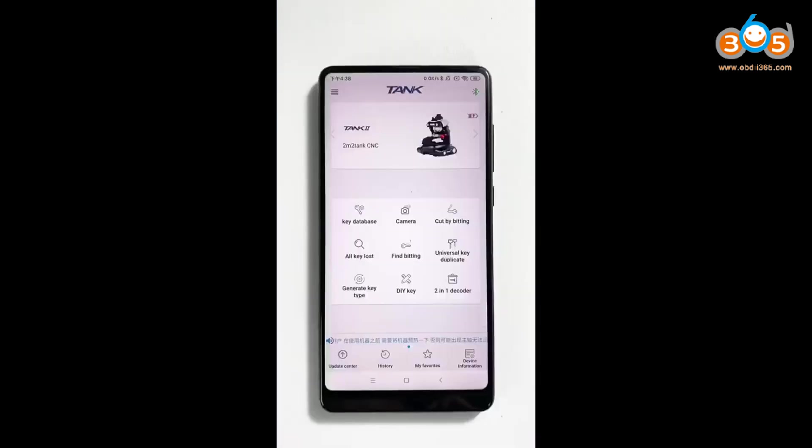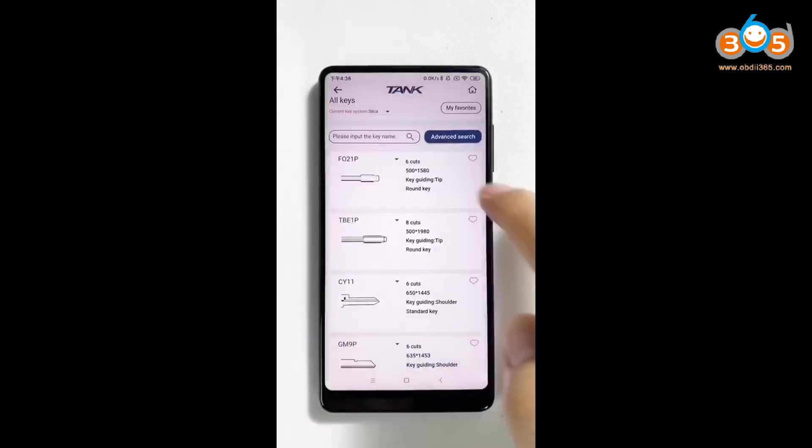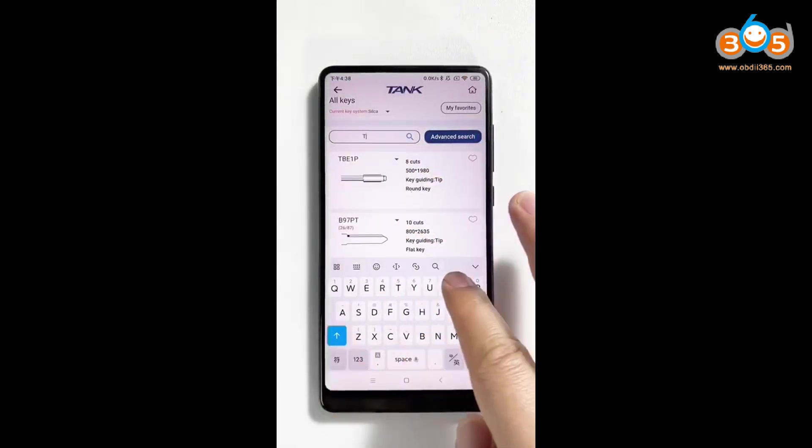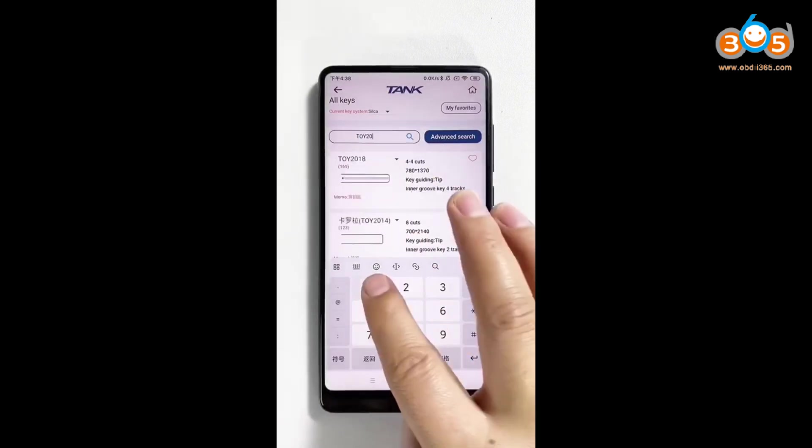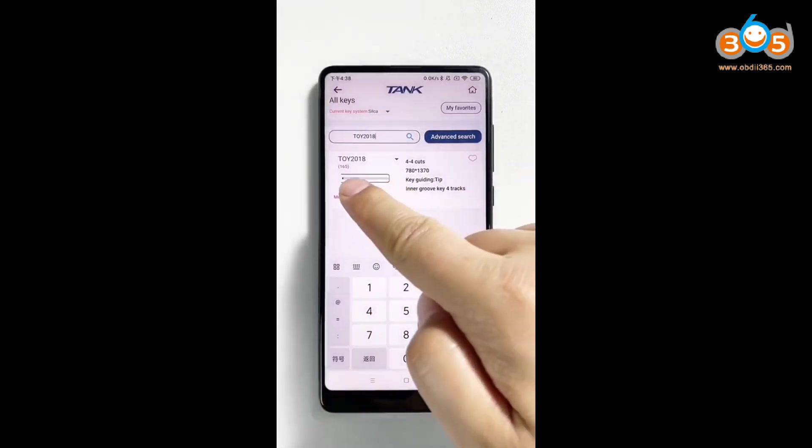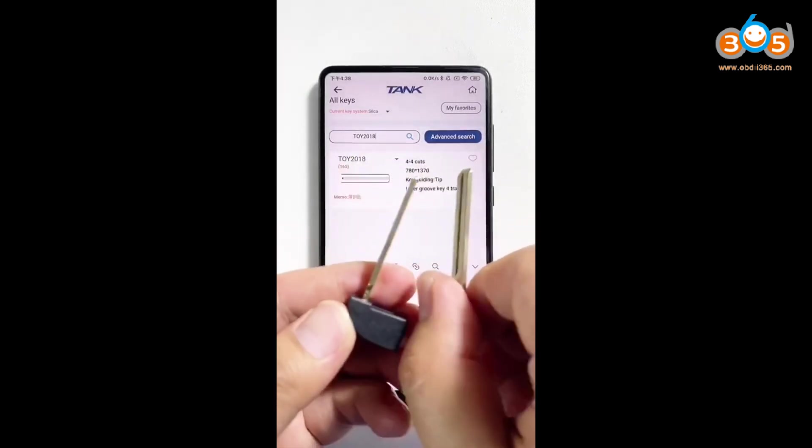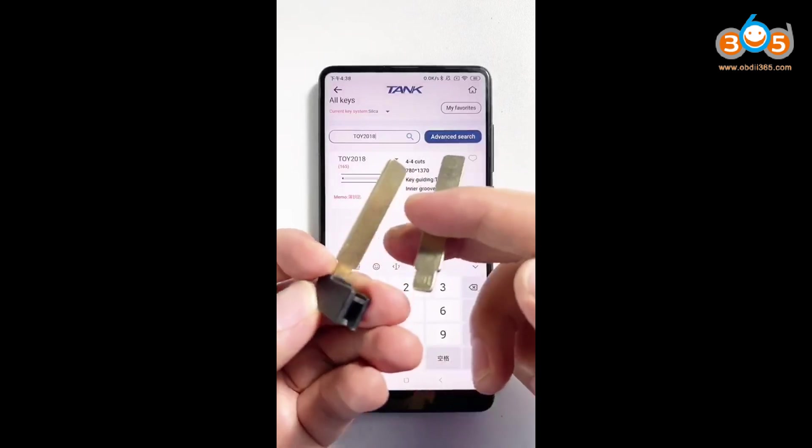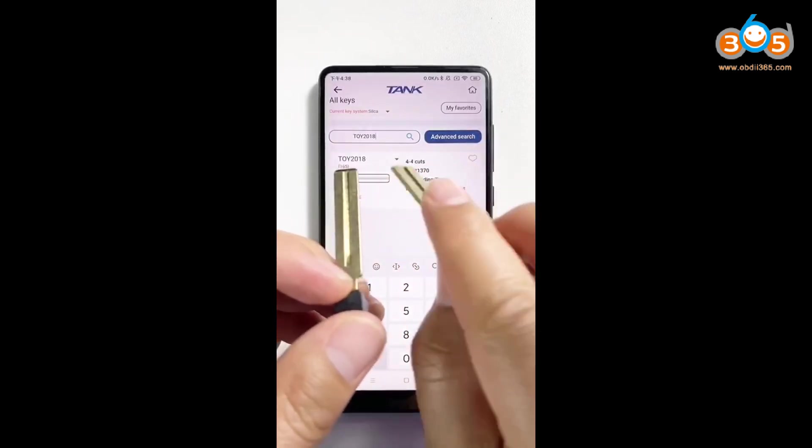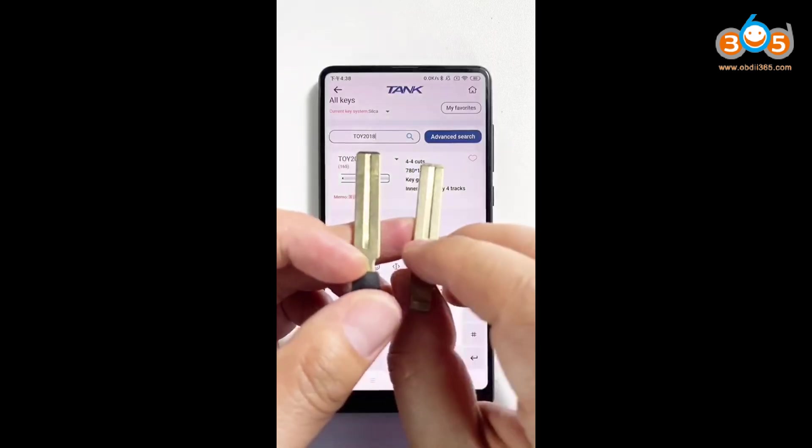And then, click cut by bitting. Search TOY 2018. Prepare proper key blank. Both of these key blanks are all right. One is universal key blank. Another is special key blank.